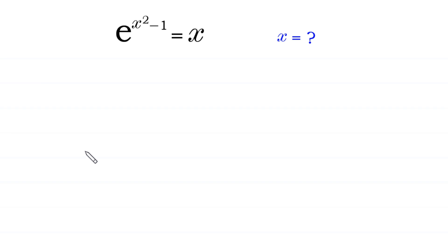Hello, welcome to how to solve this very nice exponential equation. e to the power x squared minus 1 is equal to x. We need to find all possible values of x.